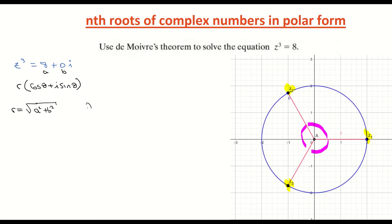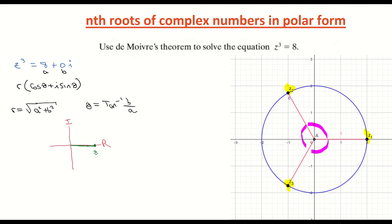The angle θ is found by taking the inverse tangent of b over a — that's the angle between the x-axis and the complex number. We need the modulus and the argument. A quick sketch of 8 + 0i: plotting it, we go out 8 on the real axis and 0 on the imaginary axis. From the picture, the modulus of that complex number is clearly 8.